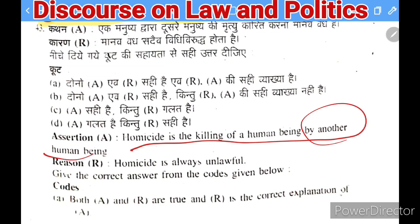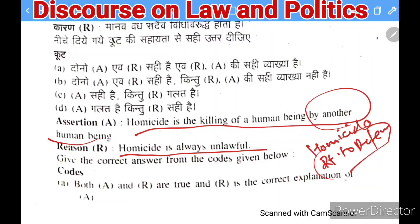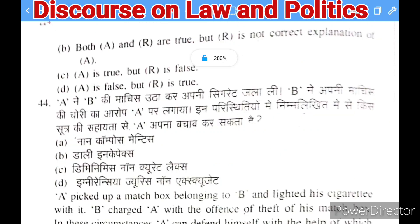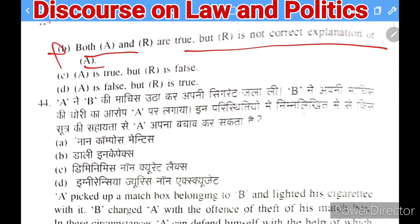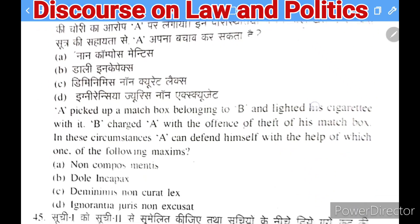Next question: assertion — homicide is the killing of a human being by another human being. Reason — homicide is always unlawful. Options: both A and R true and R is correct explanation; both true but R not correct explanation; A is true but R is false; A is false but R is true. The right answer is C — A is true but R is false, because homicide is not always unlawful (e.g., killing in exercise of the right of private defence is lawful homicide).